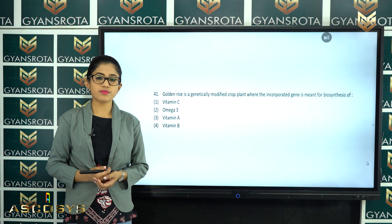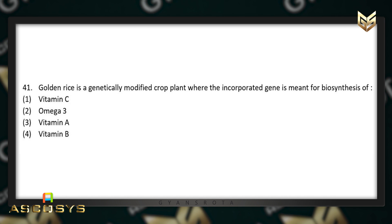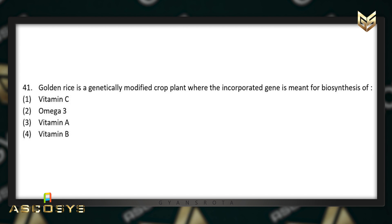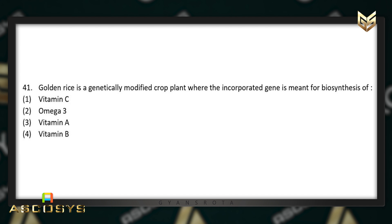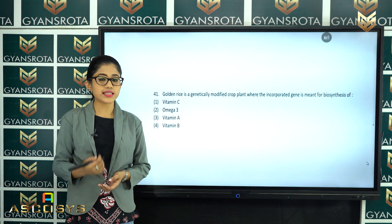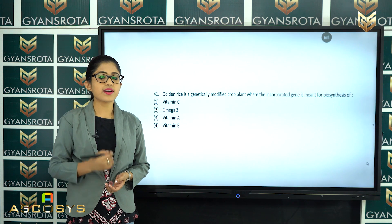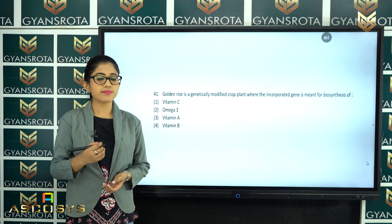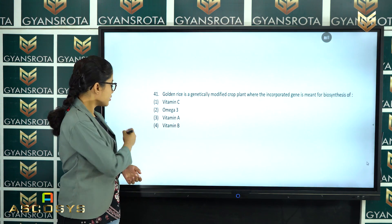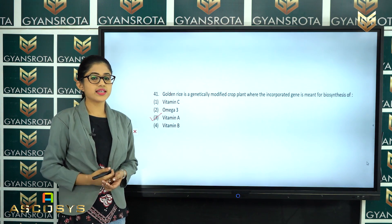The next question is question number 41. Golden rice is a genetically modified crop plant where the incorporated gene is meant for biosynthesis of vitamin C, omega-3, vitamin A, or vitamin B? This is a direct question from the NCERT textbook, chapter Applications of Biotechnology. Golden rice is a genetically modified crop made for enriching vitamin A. Option number 3 is the correct answer.